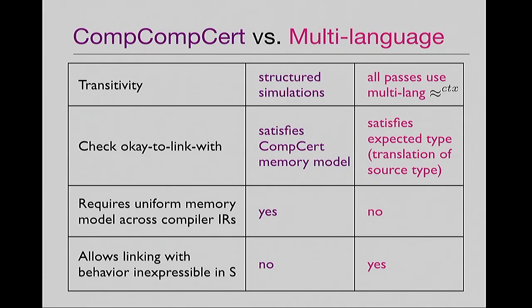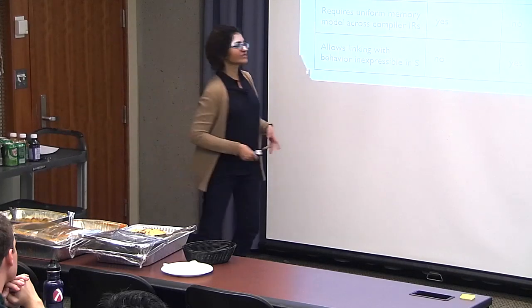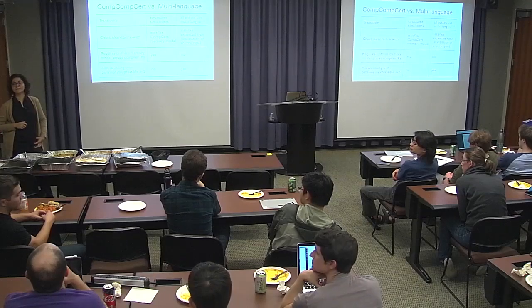How did we each check whether some ET prime is okay to link with? For them, it essentially boils down to satisfying constraints imposed by the CompCert memory model. For us, something has to be of an appropriate translation type. They require a uniform memory model across all the IRs; we do not. We actually showed an example of linking with code that cannot possibly be expressed in the source — our source doesn't have mutable references, but we've linked with a stateful counter to exhibit that this is possible. With compositional CompCert, I think the answer is no, because C and assembly are already sort of equi-expressive.